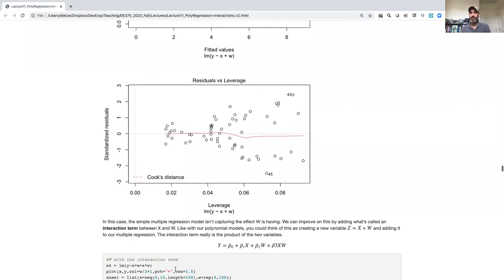So the next thing I'm going to do as a way of trying to address this is to add what's called an interaction term. So I'm literally going to write, in addition to my beta 0 intercept, beta 1 x, beta 2 w, I'm going to add a beta 3 times x times w.